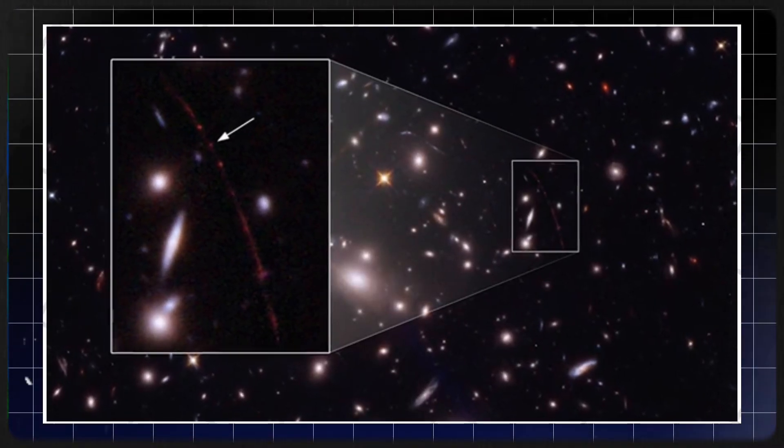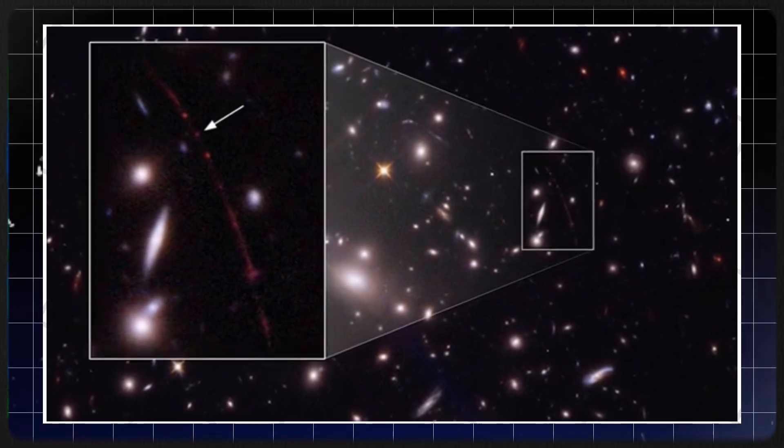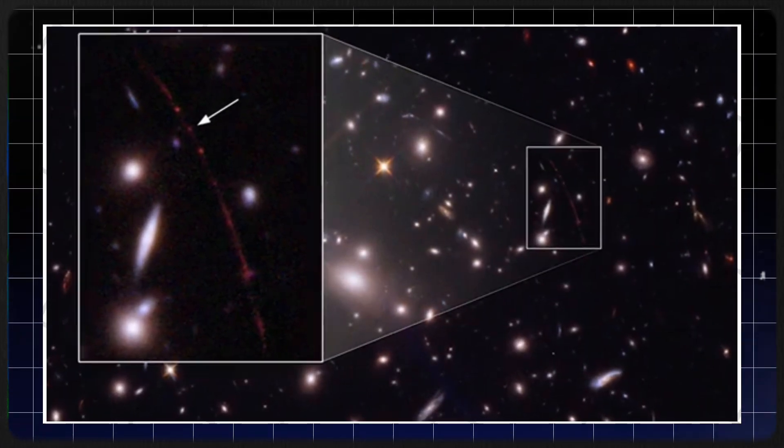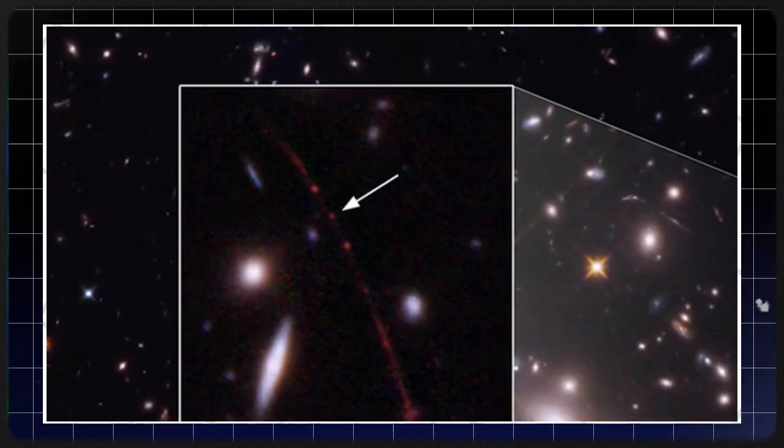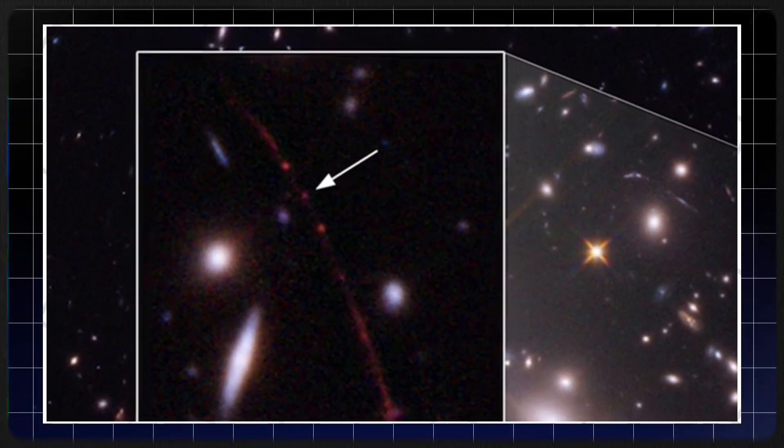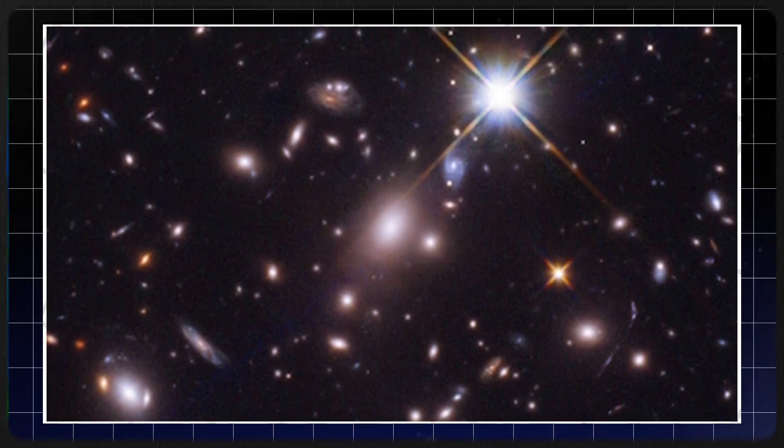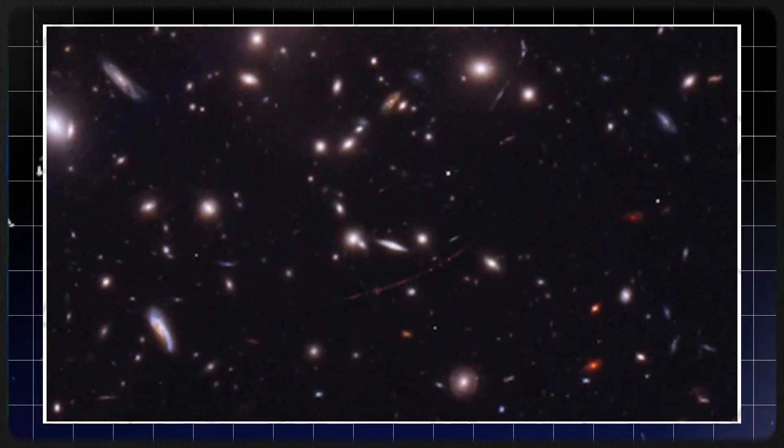Eärendel, while ancient, isn't quite the oldest star out there, nor is it the elusive first-generation star that scientists had hoped to find. Stars from the universe's first epoch are thought to have been blue supergiants, up to 1,000 times larger than our sun, burning brightly but living very short lives. Eärendel, however, didn't fit that profile.